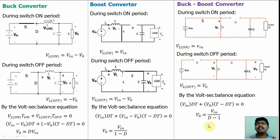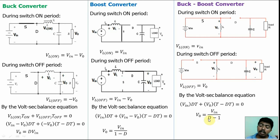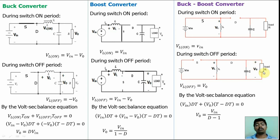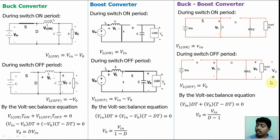One more important point: the duty ratio D is always less than 1, because D = T(on)/T and T(on) is always less than total time T. So in the buck-boost converter, the average output voltage V₀ will always be negative if we consider the current flowing out of the load rather than into it. For any duty ratio value, we always get a negative output voltage for the buck-boost converter. In the buck-boost converter, current always flows out from the load, unlike the buck and boost converters where average current flows towards the load. We may replace the load polarity accordingly — if we replace the polarity, the voltage will be positive; if we keep the original polarity convention, the voltage will be negative.